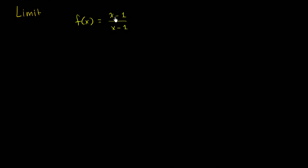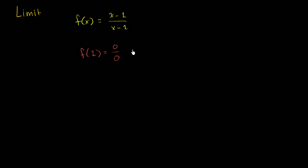Can't I just simplify this to f of x equals 1? Well, you're almost right. The difference between f of x equals 1 and this thing right over here is that this thing is undefined when x is equal to 1. If you have f of 1, what happens? In the numerator you get 1 minus 1, which is 0. And in the denominator you get 1 minus 1, which is also 0. And so anything divided by 0, including 0 divided by 0, this is undefined.